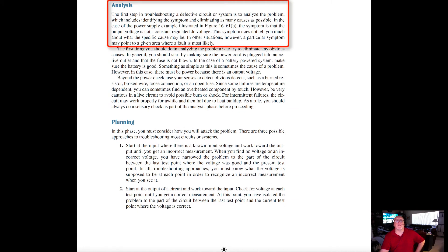In the analysis stage, the first step in troubleshooting a defective circuit or system is to analyze the problem, which includes identifying the symptoms and eliminating as many causes as possible. In the case of a power supply example, the symptom is that the output voltage is not a constant regulated DC volts. This symptom does not tell you much about what the specific cause may be. In other situations, however, a particular symptom may point to a given area where a fault is most likely. The first thing you should try in analyzing the problem is to eliminate any obvious causes.